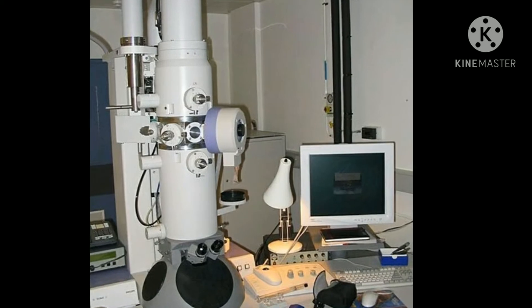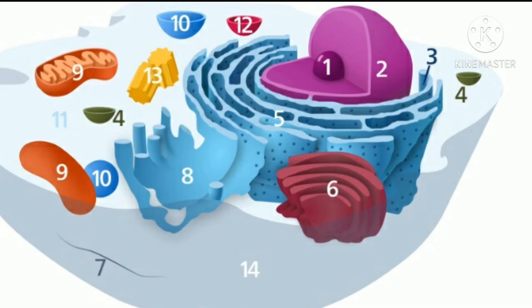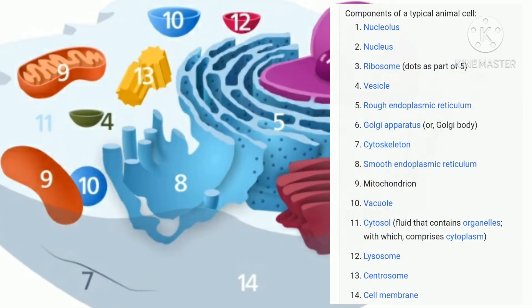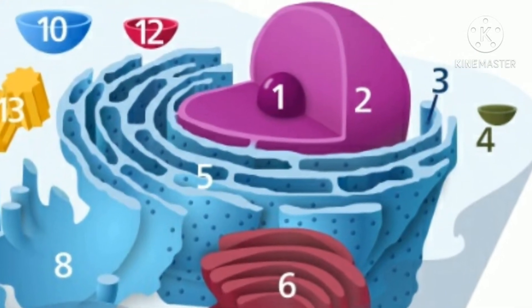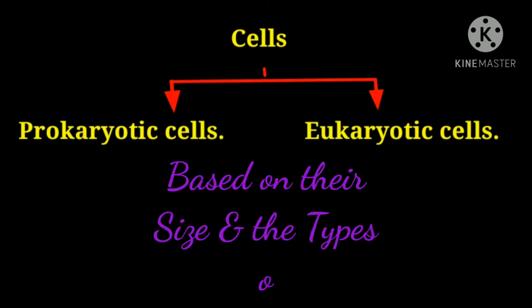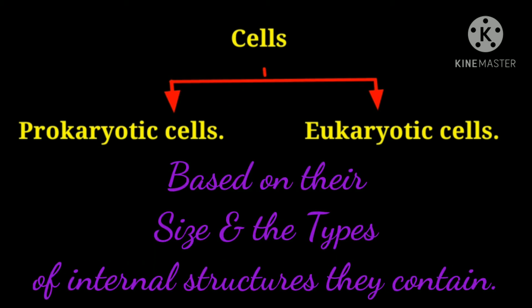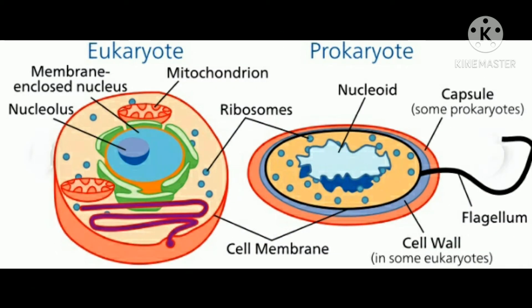When the electron microscope became widely available, biologists were able to examine the internal structure of a wide variety of cells. Biologists discovered that there were two basic classes of cells — prokaryotic cells and eukaryotic cells — based on their size and the types of internal structures they contain. Prokaryotic cells are structurally simpler, whereas eukaryotic cells are structurally more complex.